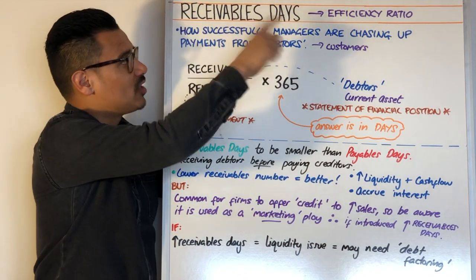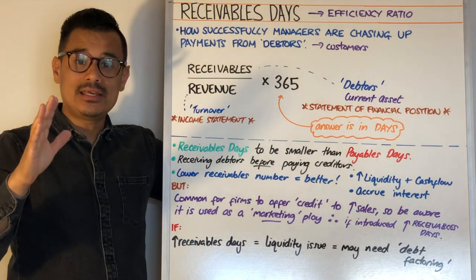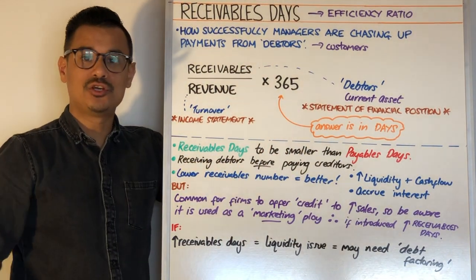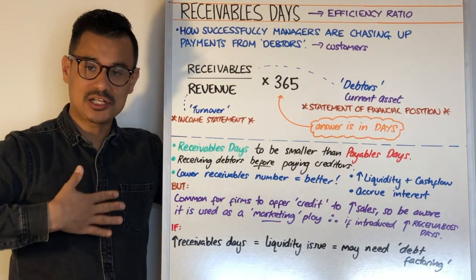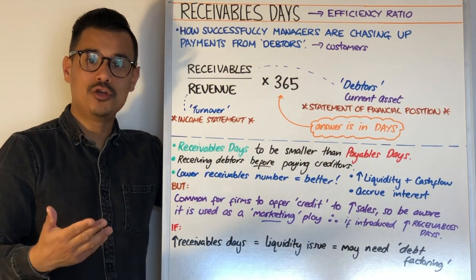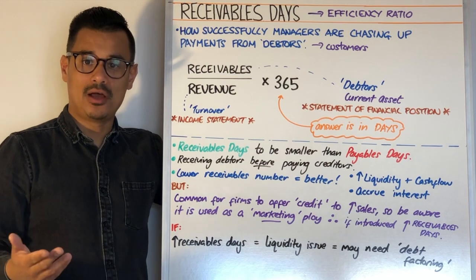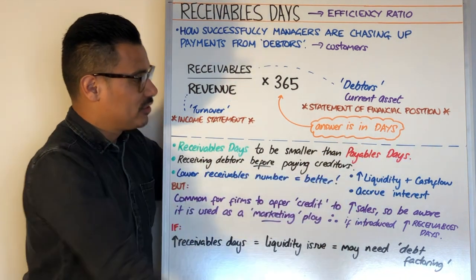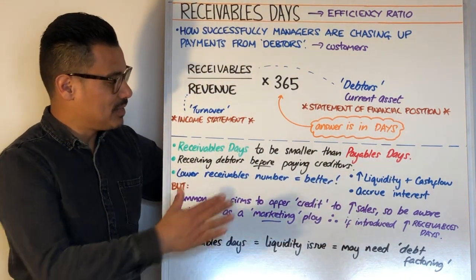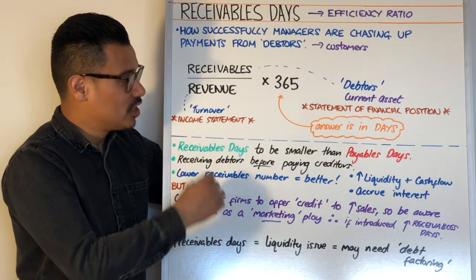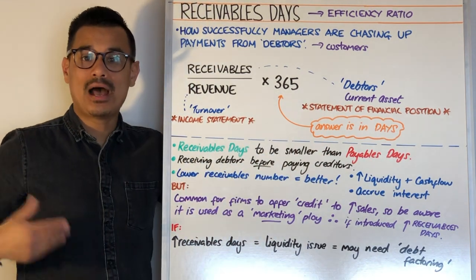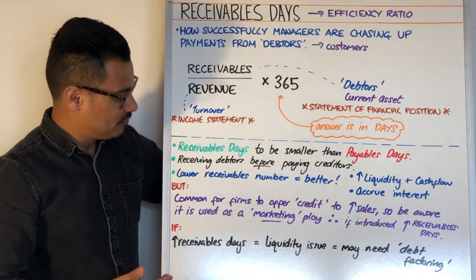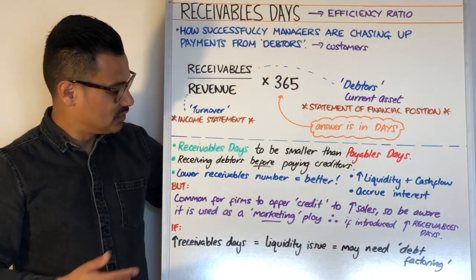Ideally, receivables days should be smaller than payables days, because you want to receive your cash inflows before you pay out to your suppliers. For example, receivables of 30 days and payables of 40 days means there's a 10-day gap between when you've received the funds and when you pay your suppliers on average.